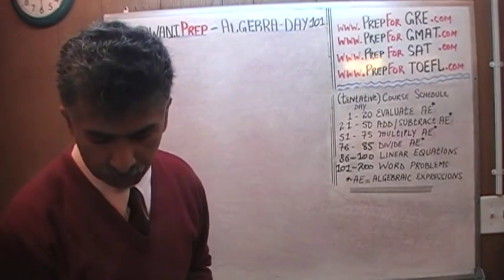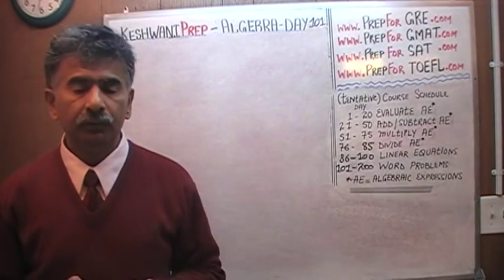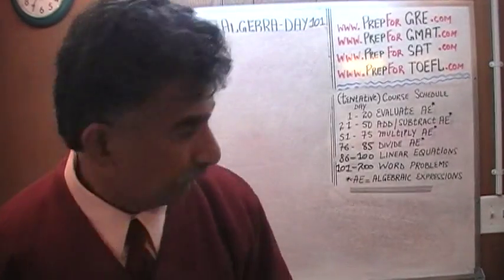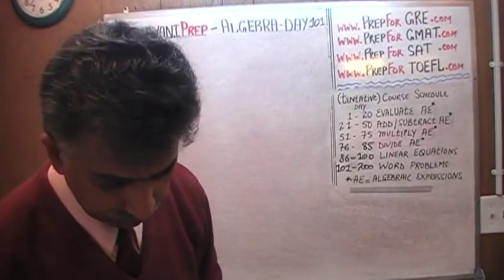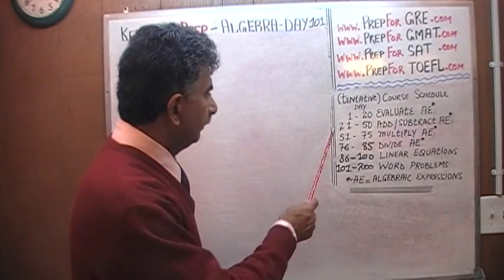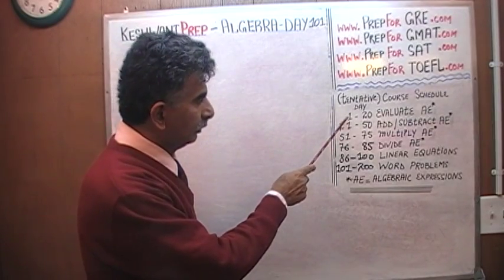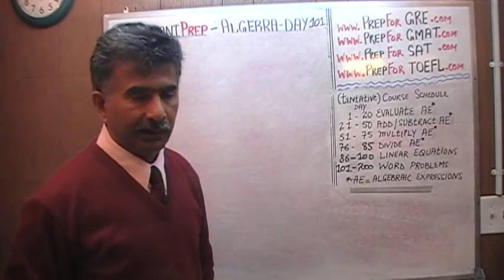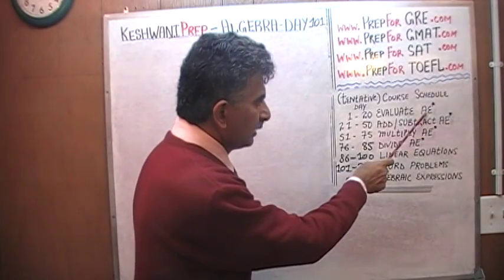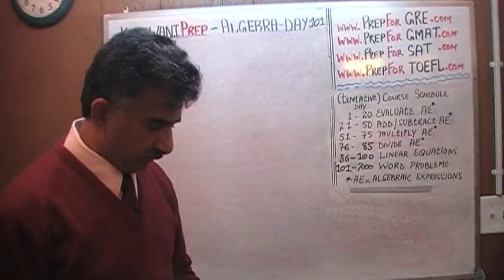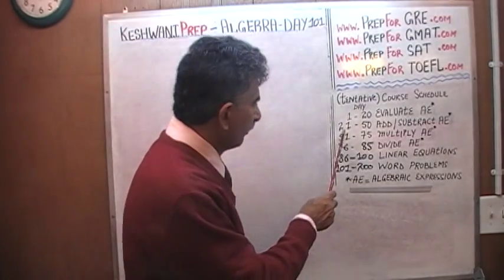We are halfway through the course. For those of you who are joining us for the very first time, here is a quick overview of the course. In the first 20 days, day 1 through 20, we learned how to evaluate algebraic expressions. Over the next 30 days, day number 21 through 50, we learned how to add and subtract algebraic expressions.